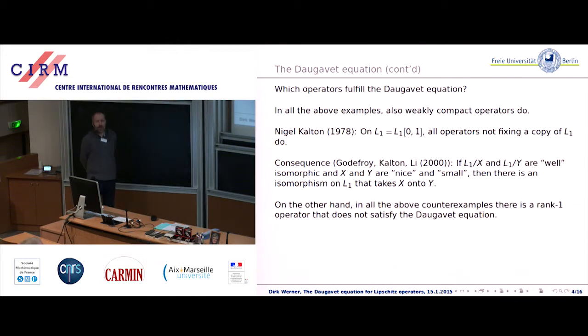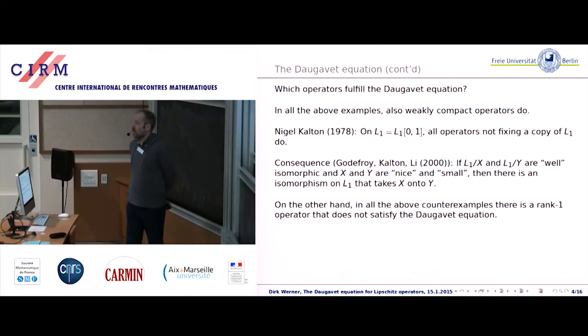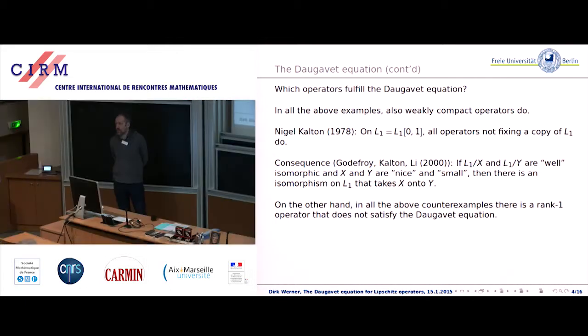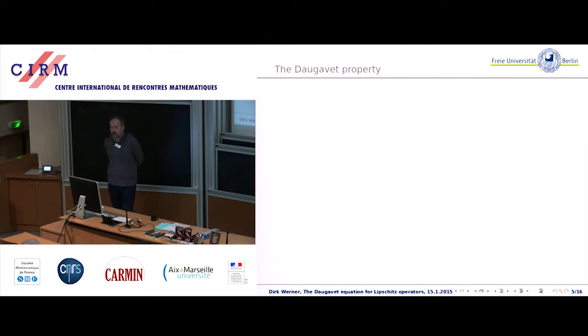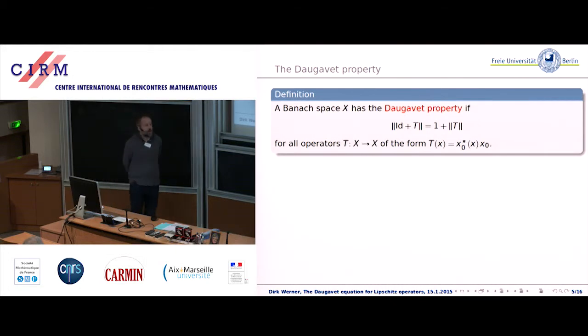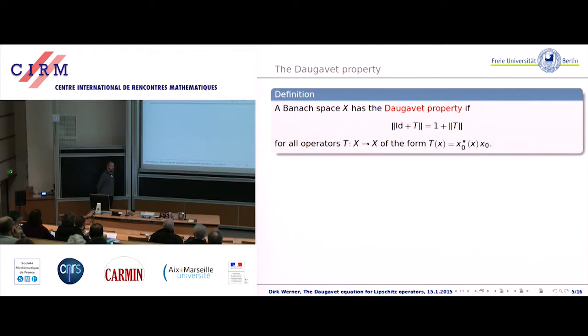Now if you look at the counter examples from the first page, it turned out that there's not just some compact operator for which the Daugavet equation doesn't work, but one can always find a rank one operator that doesn't work. So this leads to a dichotomy in all these examples. Either a relatively large class of operators works, or the simplest operators don't work. It was Vova Kadets who had the vision of investigating this phenomenon from the very basics of the one dimensional operators. He had the idea of defining a Banach space to have the Daugavet property if the Daugavet equation holds for the simplest operators available, the one dimensional operators, the rank one operators.